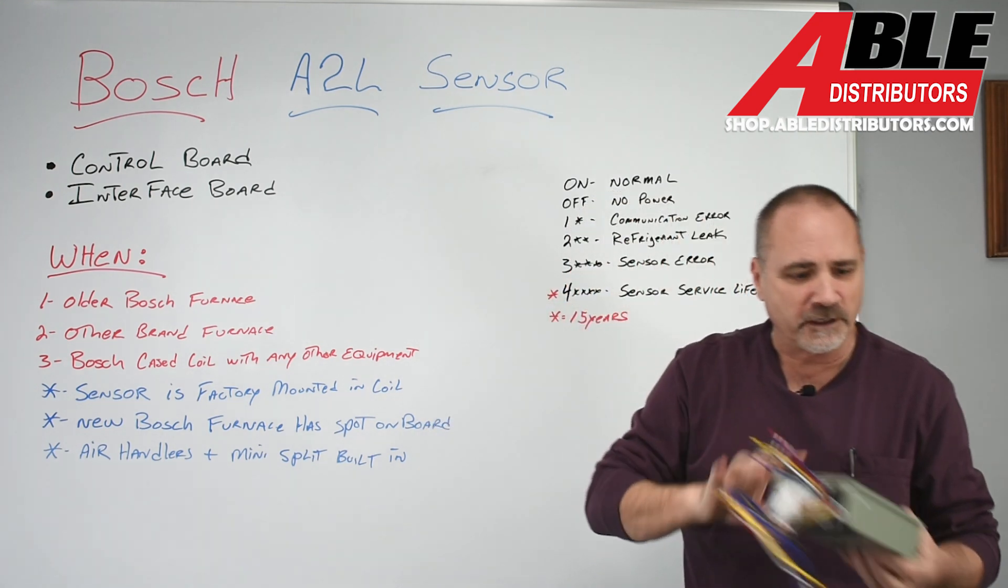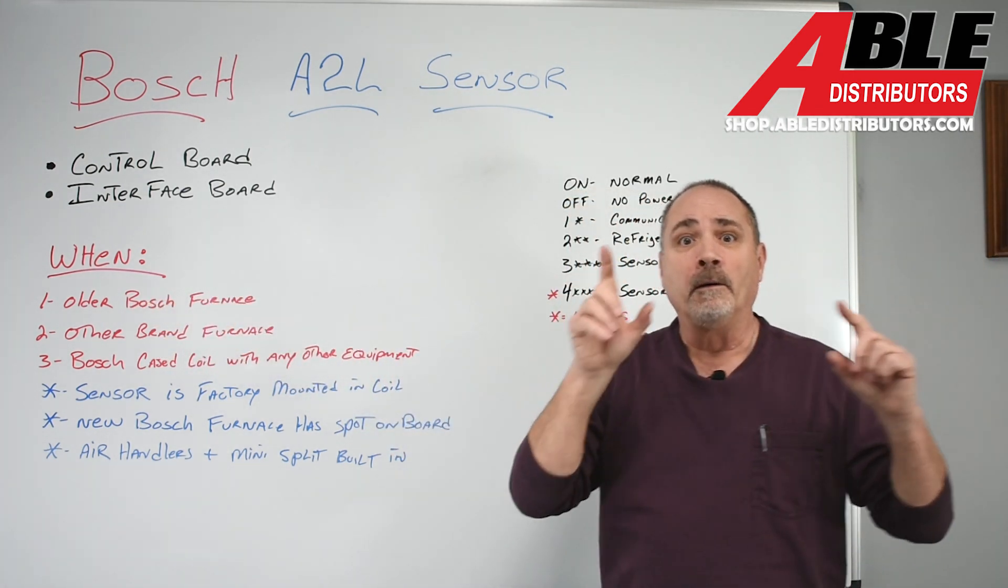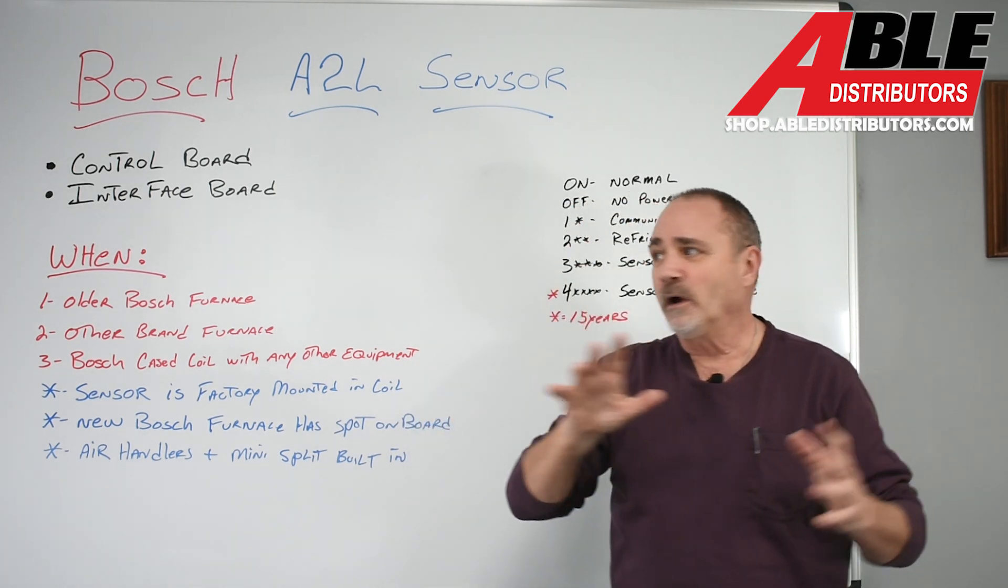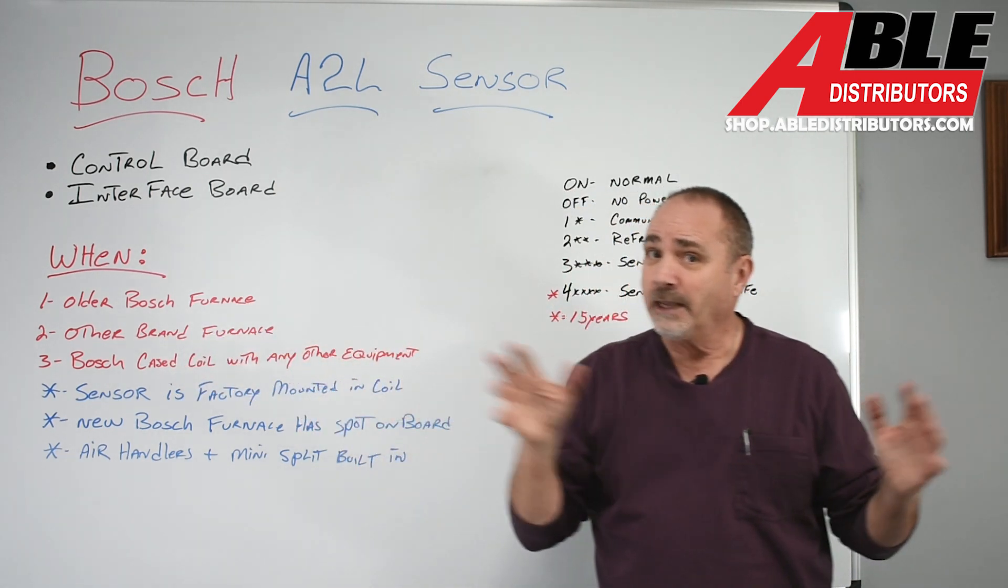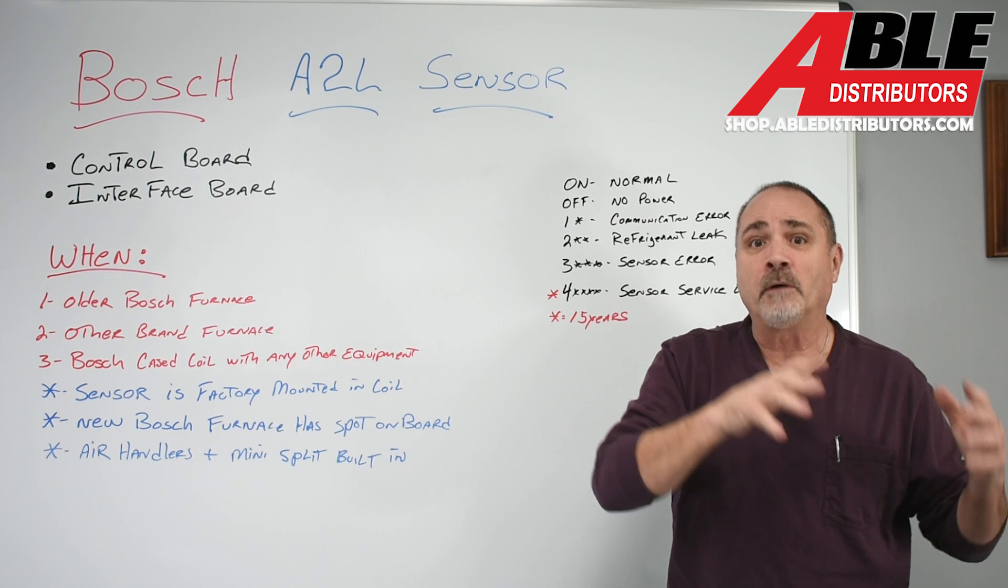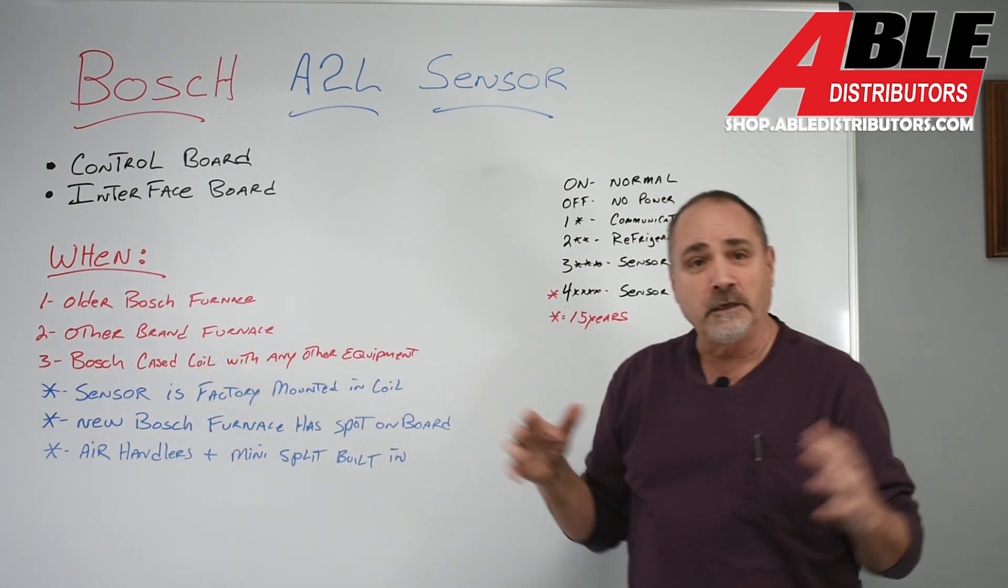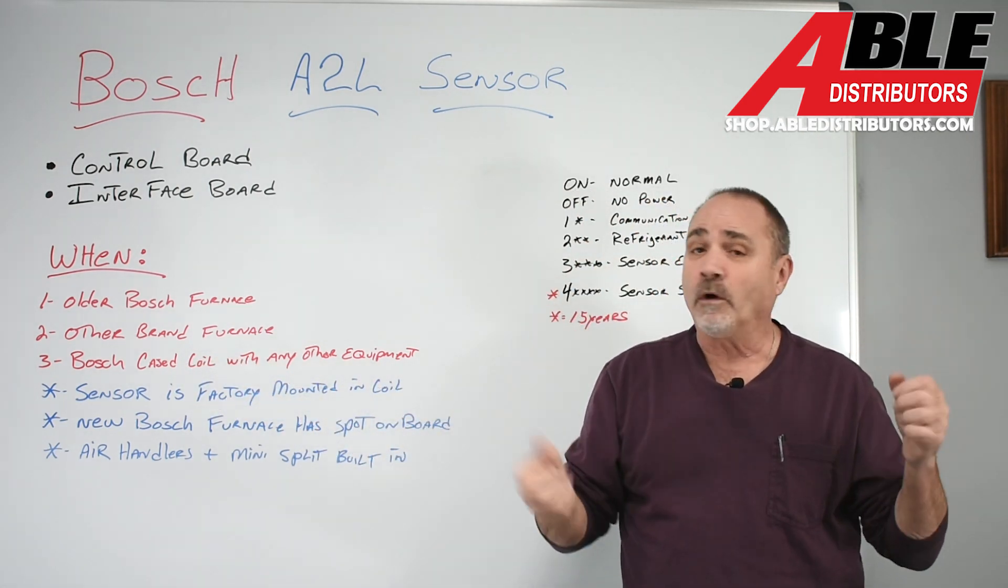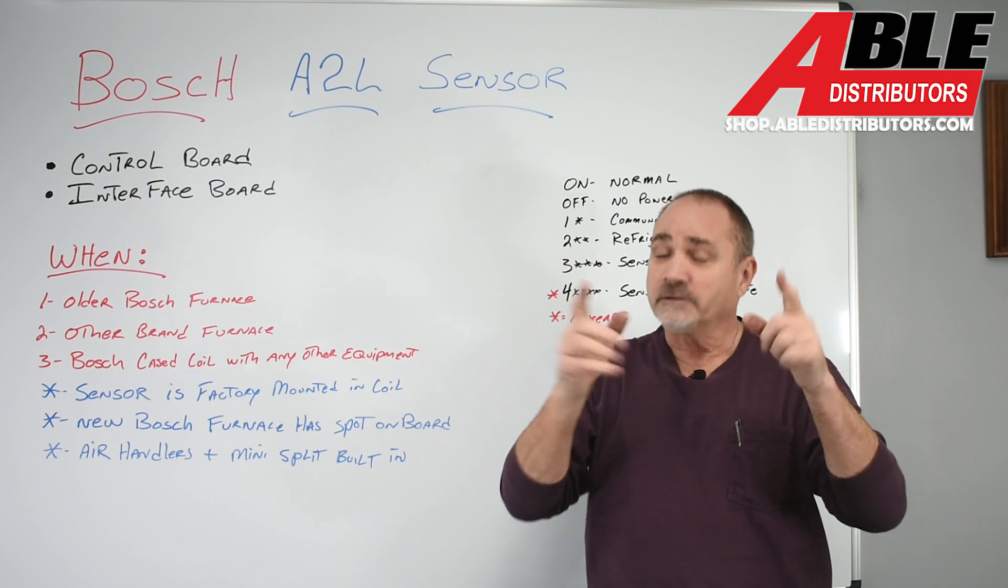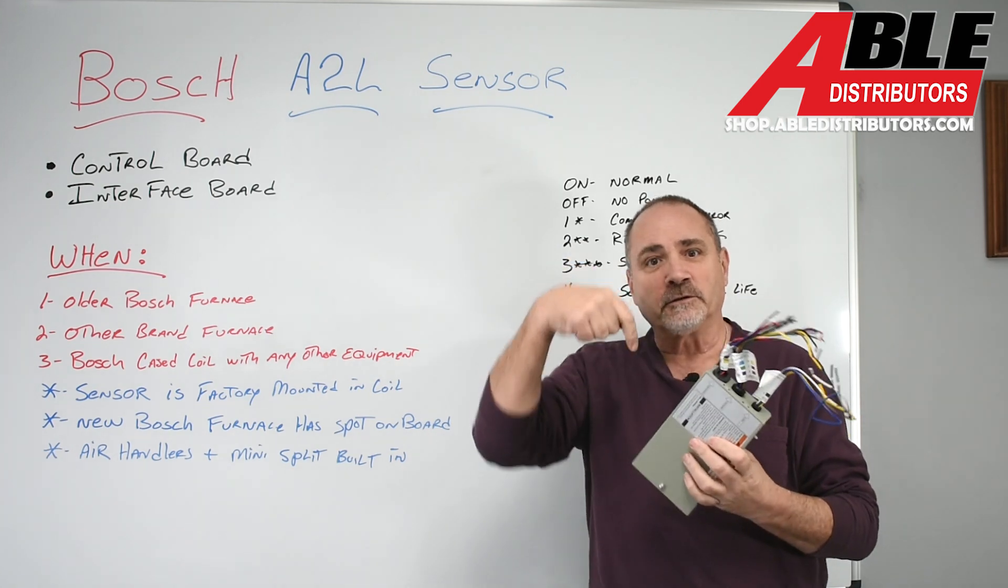This box, this interface board, you're going to need it when you put a new 454 A2L Bosch heat pump with an older Bosch furnace. That could happen a lot. If you put their cased coil and a Bosch heat pump with any other brand of furnace, and again, that could happen a lot because it's a great piece of equipment, and you might not need to replace the furnace every single time you want to put a heat pump or a really, really good AC on that furnace. Anytime you use the Bosch cased coil with any other piece of equipment, essentially, they have a really, really nice cased coil. The sensor comes built in.